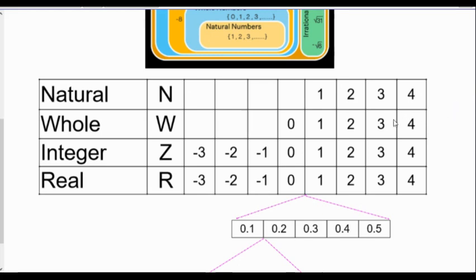Initially, when humans started counting, they didn't use the number zero — zero was not a number. But since then, we've added zero to the list. So natural numbers, that's naturally how you would count, starts at one. Whole numbers start at zero, and it's zero, one, two, three, four, five, six, seven, eight, nine, ten, onward to infinity.